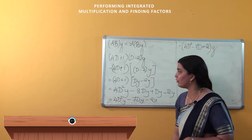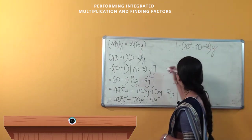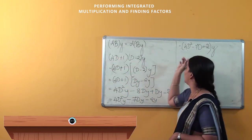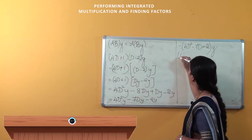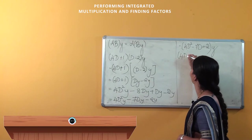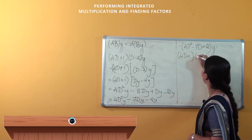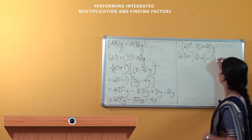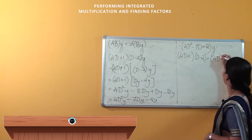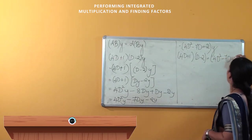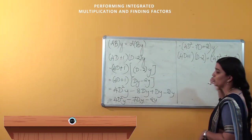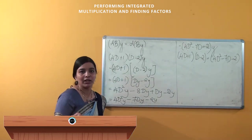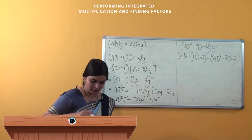When we simplify further and compare the original expression with this result, we can observe that (4D + 1) into (D − 2) is nothing but 4D² − 7D − 2. In this way, we can perform integrated multiplication of differential operators.